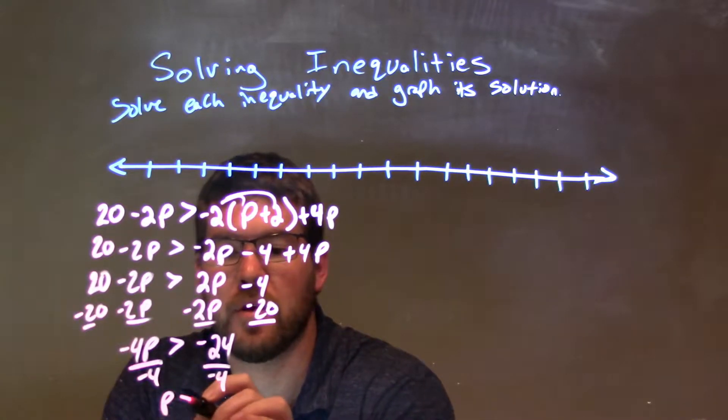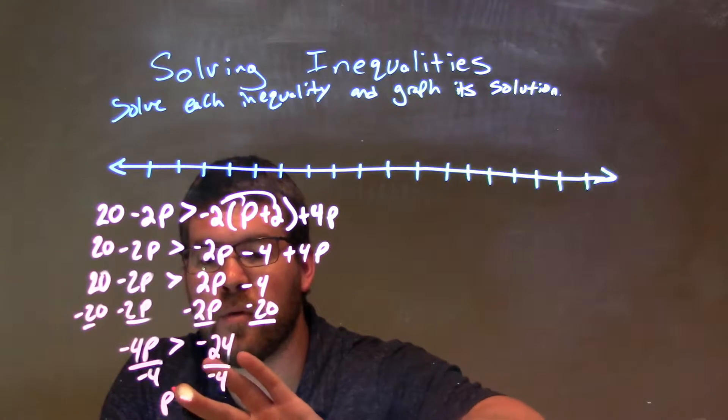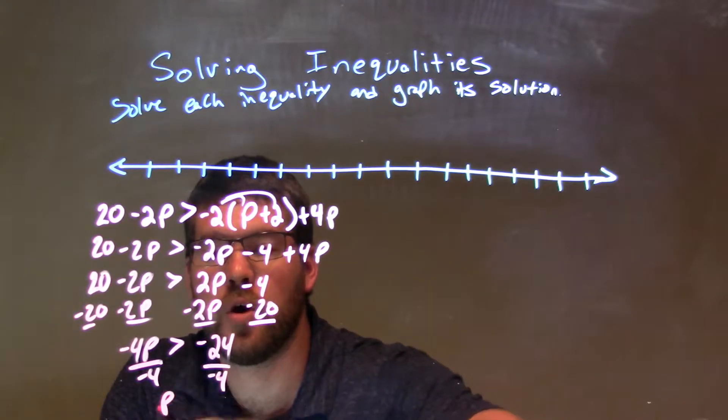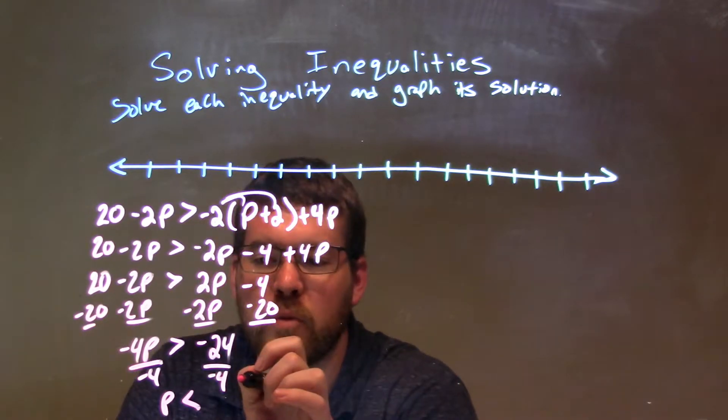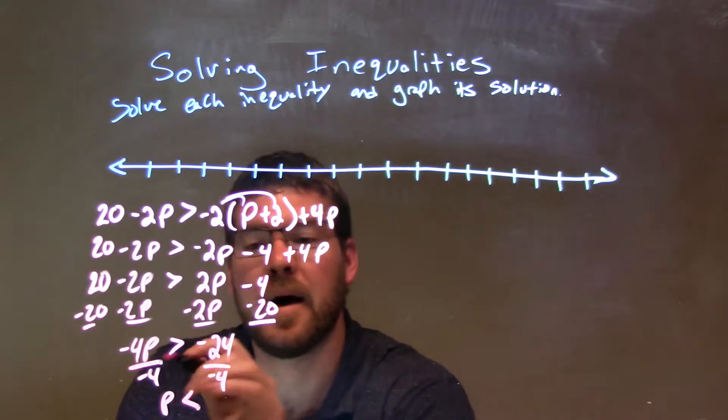So, we're left with here just p is greater, well, not greater than, right? Because we divide by a negative over the inequality, and again, greater than the side turns to a less than the side.